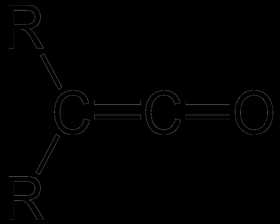A ketene is an organic compound of the form RR. Ketene also refers to the specific compound CH2 equals C equals O, the simplest ketene molecule, which is occasionally called ethenone.